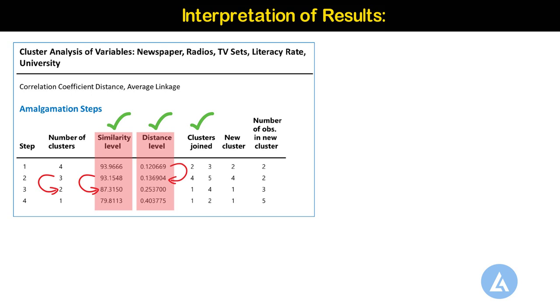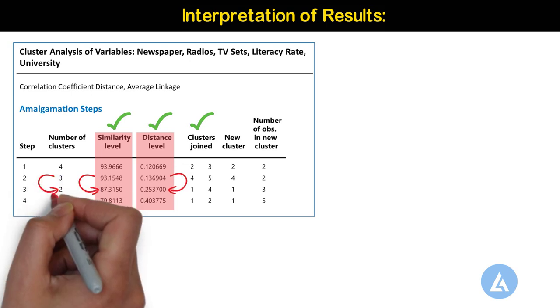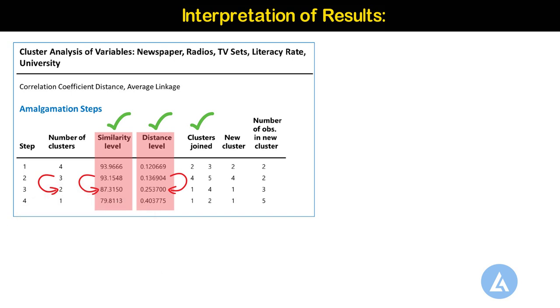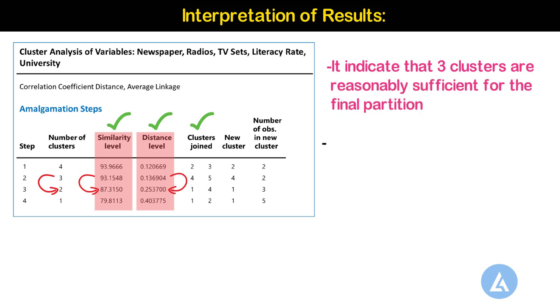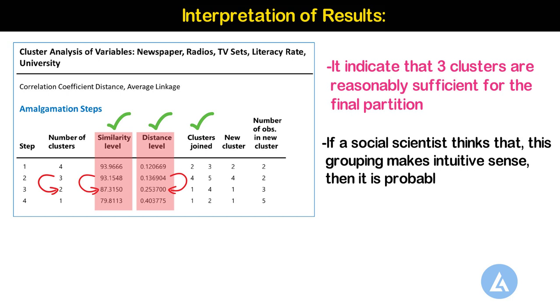The distance and similarity results indicate that 3 clusters are reasonably sufficient for the final partition. If a social scientist thinks that this grouping makes intuitive sense, then it is probably a good choice.